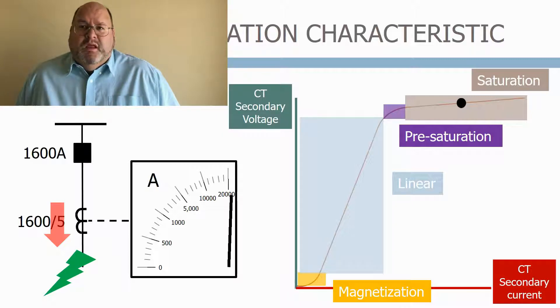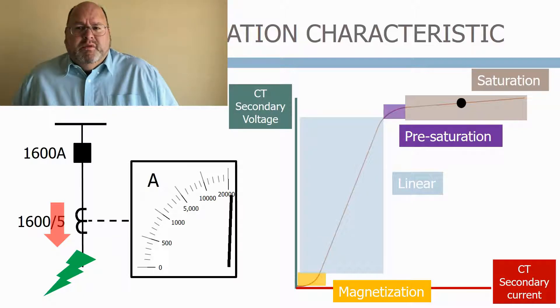This is a typical operating characteristic for a feeder protection current transformer, which is designed to operate during both normal and fault conditions. When the primary current is less than the rated current of 1600 amps, the CT will normally operate at the bottom of the linear range.